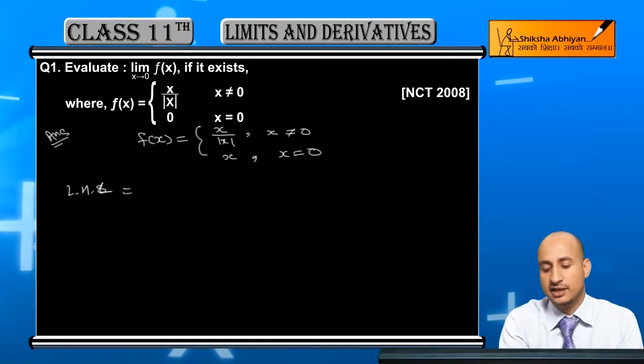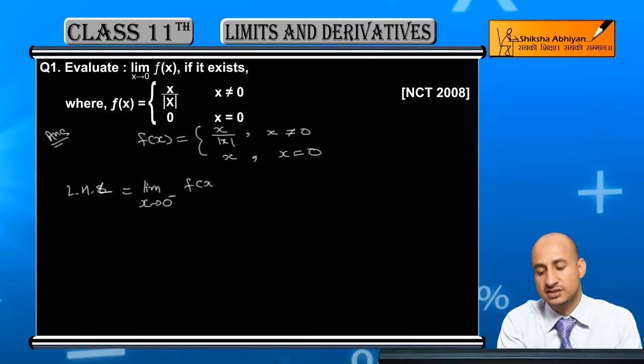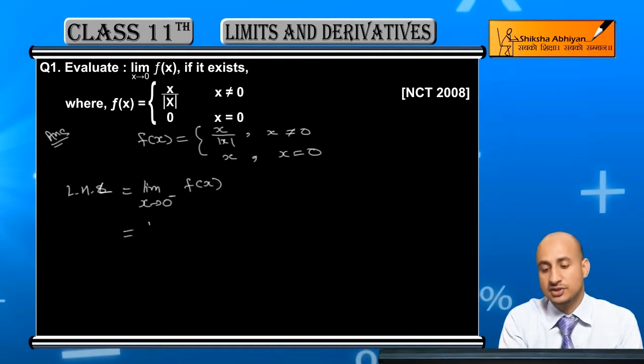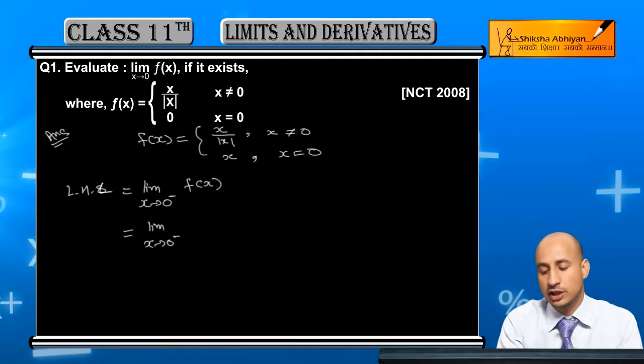Here we will evaluate the left hand limit. This will be limit x→0⁻ of f(x). 0 minus means 0 slightly less, so when x approaches from the left, f(x) = x/|x|.